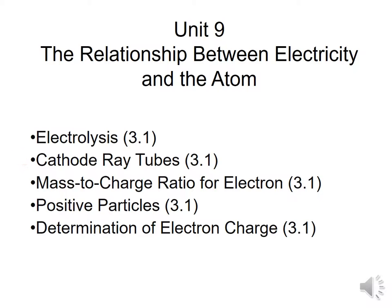We're also going to look at cathode ray tubes toward the very late 1800s. That was used to actually discover that atoms are composed of particles — they aren't just indivisible atoms like Dalton thought. We're going to look at the mass-to-charge ratio for one of the particles called an electron, look at the idea that there are positive particles inside an atom, and finally find out what the value of the electron charge is. Those are the topics for this section.